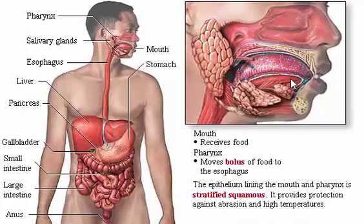The epithelium lining the mouth and pharynx is stratified squamous, providing protection against abrasion and high temperatures. The epithelium covering the hard palate and dorsal surface of the tongue is keratinized.